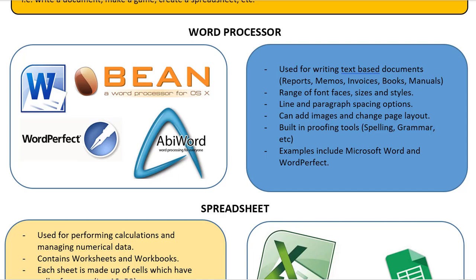The features of a word processor include a range of font faces, which is the type of font you can select, the sizes of the font, and the styles of the font. You can change things like line and paragraph spacing, add images, and change the page layout. You can also use proofing tools such as spell check, grammar check, etc.